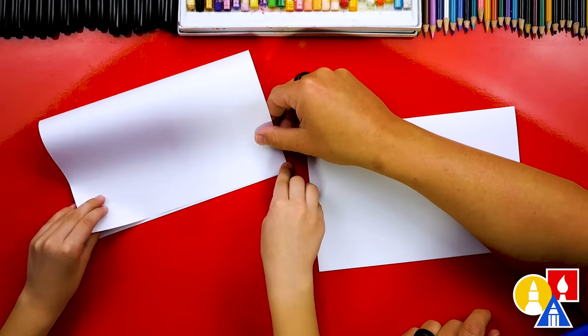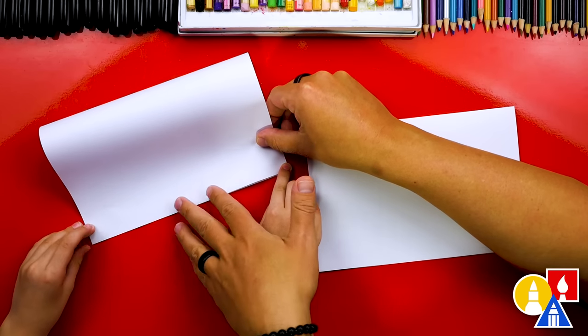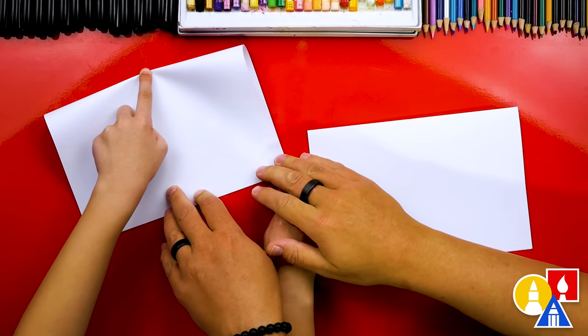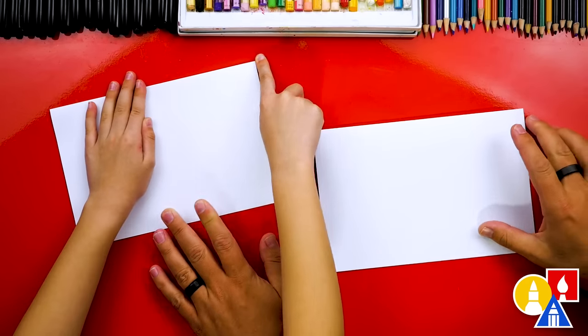You got it. Keep going. Do the other side and then right down the middle right there and then out to the corners. There's our first fold.